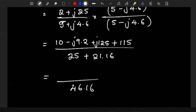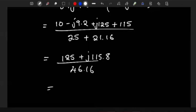Now we simplify. The denominator will be 46.16. In the numerator we have 10 plus that 115, we get 125. And then we have j, and then you have 125 minus 9.2, we get 115.8.